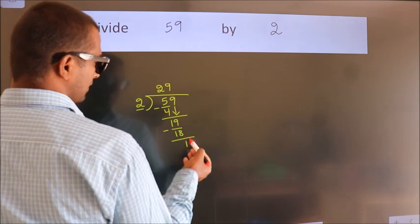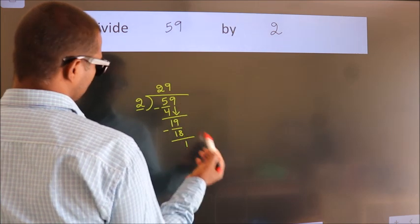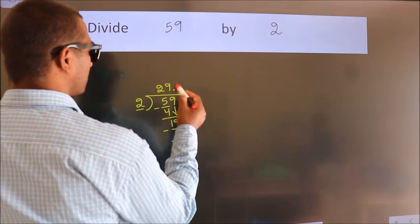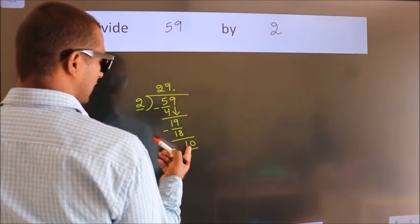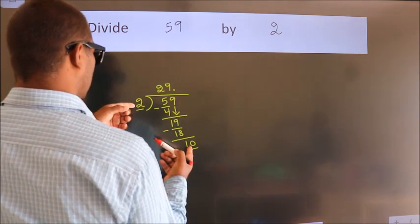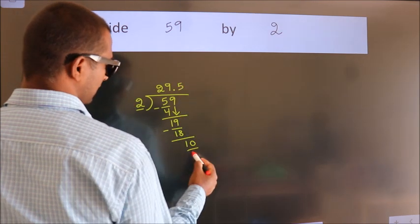After this, no more numbers to bring down. So what we do is, we put a dot and take 0. So 10. When do we get 10 in the 2 table? 2 times 5 is 10.